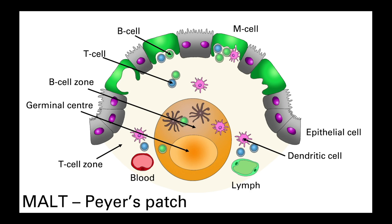Mucosa-associated lymphoid tissues are found throughout the body. Peyer's patches are found in the small intestine, and there are also MALTs associated with the airways, urogenital tract, lactating breast, salivary glands, eyes, and skin. We also find MALTs in the appendix, tonsils, and adenoid glands. The reason we need these MALTs is because mucosal membranes are often very thin — sometimes only a single layer thick — which allows for the exchange of gases or nutrients but also makes them very susceptible as an entry point for microbes.